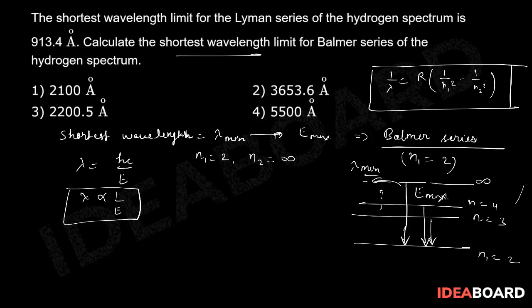So now put these values. Put N1 is equal to 2 and N2 is equal to infinite in equation, which is our formula. So if you put 1 upon lambda shortest is equal to, or lambda min is equal to, R into 1 upon N1 square, 2 square, minus 1 upon infinite square. This is going to be 0.